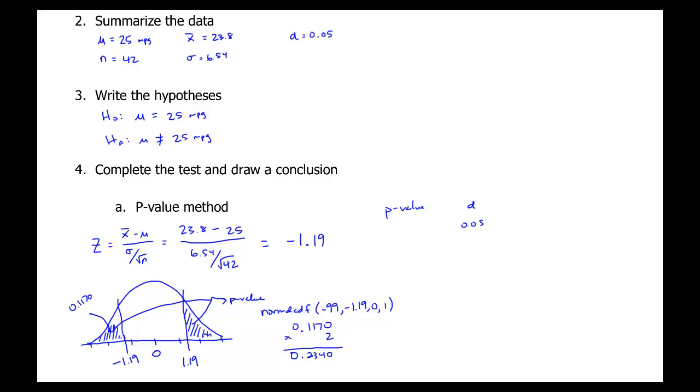So if we use alpha as 0.05 and our p-value is 0.2340, our p-value is greater than alpha. And our conclusion should be to fail to reject the null hypothesis. And if we fail to reject the null hypothesis, the null hypothesis was that the claimed value 25 miles per gallon is the population mean. So we don't have enough evidence to reject that.